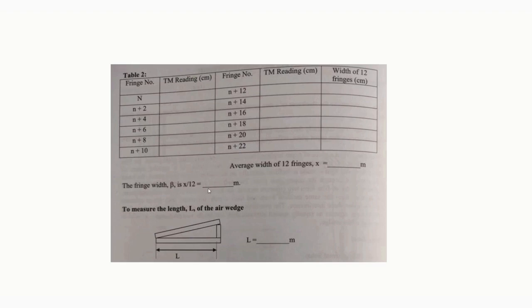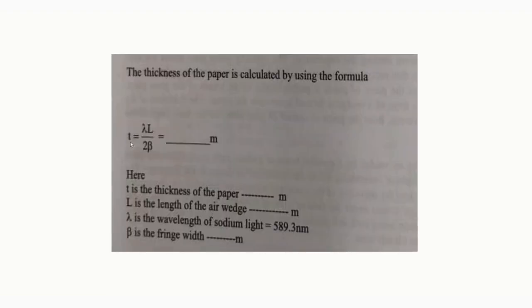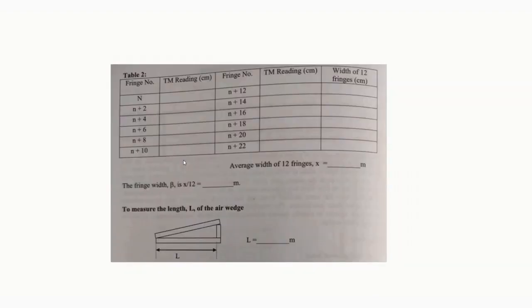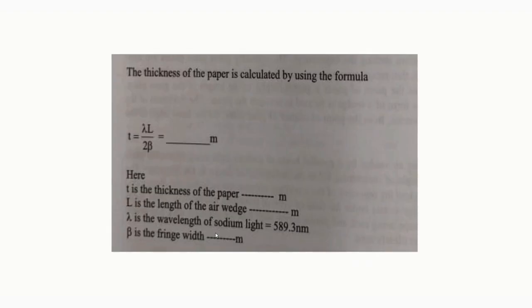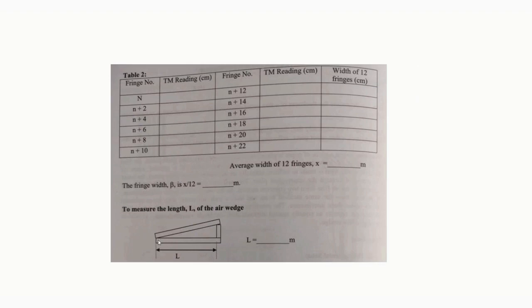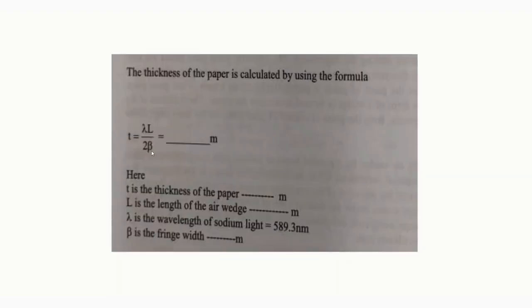Then we have to get the fringe width for one fringe by dividing the average value by 12, giving the fringe width beta in meters. That fringe width value is used in the formula to find the thickness of the paper strip: t = λL / (2β), where λ is the wavelength of sodium light (589.3 nm), L is the length of the air wedge measured by scale from one end to the other, and β is the fringe width. Note down the values, do the calculation, and get the result.